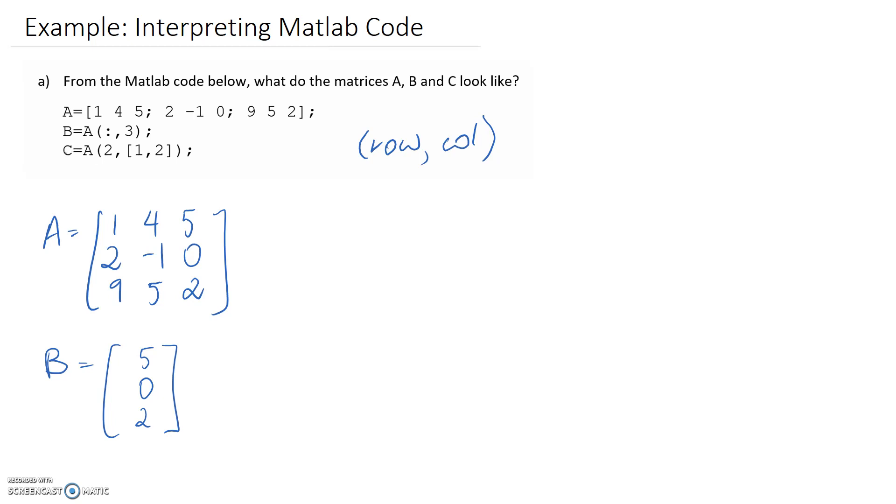So then for C, it's quite similar to the one above, because we're going to look in matrix A, and we're going to read out here, this is telling us to go to the second row, and this now here is our column reference. It's telling us to take the first and the second columns. So looking at A here, we're looking at the second row, and we want the first and second columns. So it's going to be the 2 and the negative 1 that get pulled out. So that would be our answer for all of the matrices we were asked in that part.